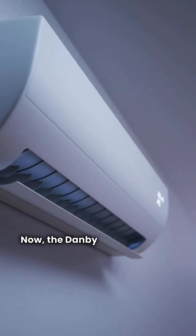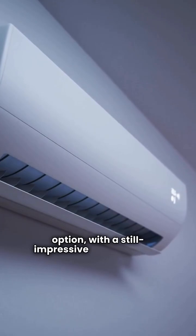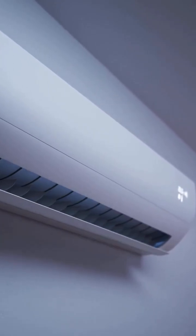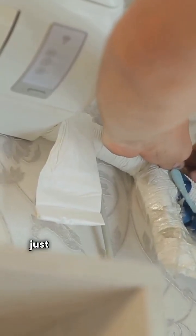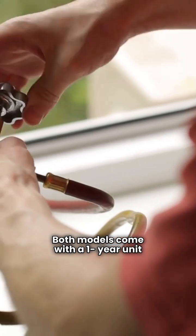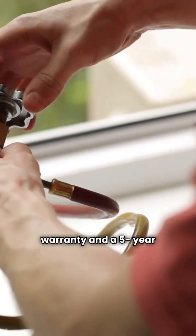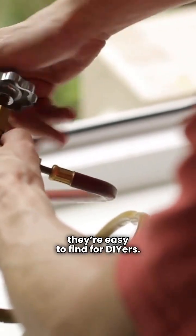Now, the Danby Essential Series is your budget-friendly option with a still impressive 20 SEER rating. It also features a variable speed compressor, keeping your comfort level high, and it's just as quiet at 40 decibels. Both models come with a one-year unit warranty and a five-year compressor warranty, plus they're easy to find for DIYers.